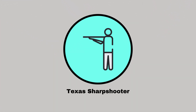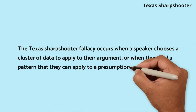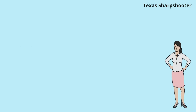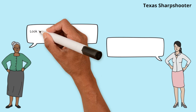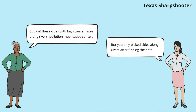Texas sharpshooter. The Texas sharpshooter fallacy occurs when a speaker chooses a cluster of data to apply to their argument, or when they find a pattern that they can apply to a presumption. Nicole cherry-picks data to fit a hypothesis, ignoring contrary evidence. Leah points out this selective use of data, stressing the importance of considering all relevant information.